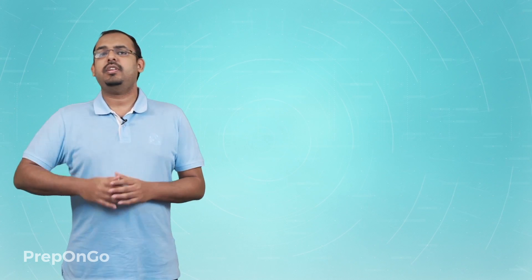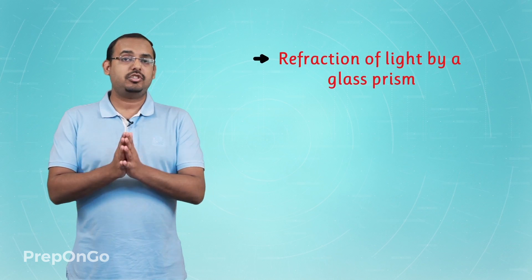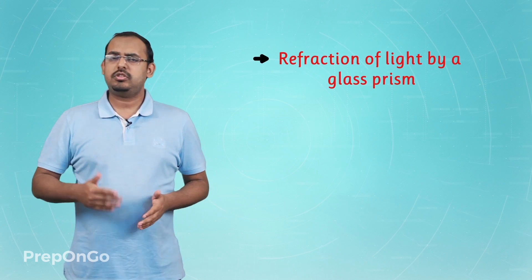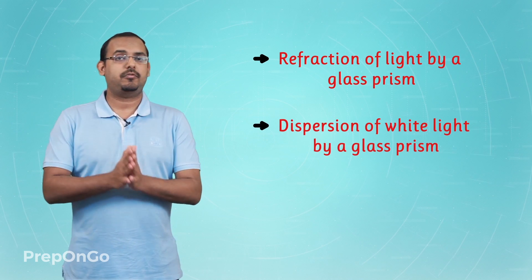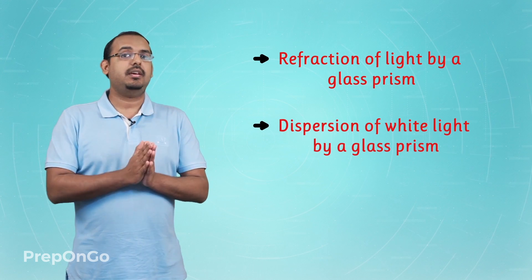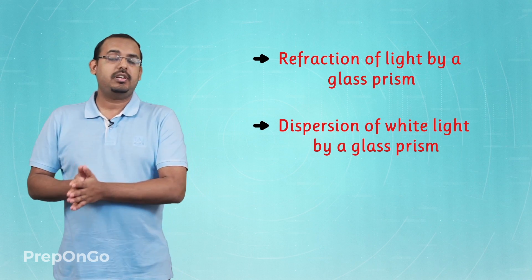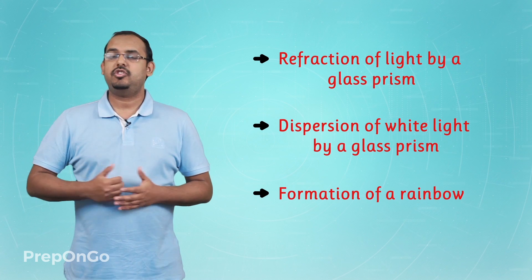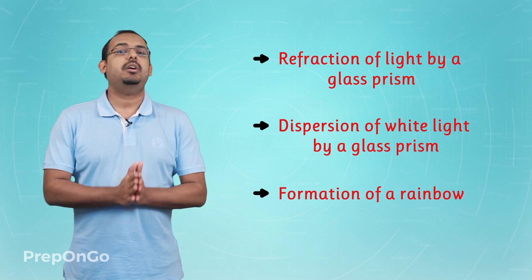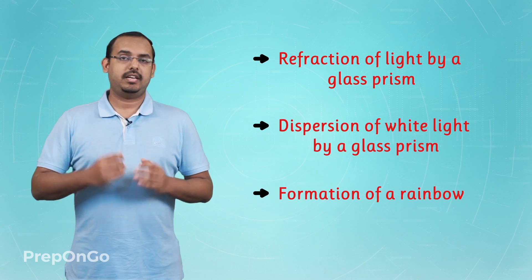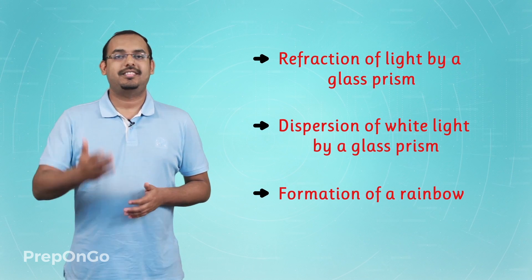So in this lecture, we have gone through the concepts of refraction of light through a glass prism and we have also seen dispersion of white light with the help of a glass prism. We understood how these concepts apply to the naturally occurring phenomenon of formation of a rainbow. In the next lecture, we will study about another interesting phenomenon that light exhibits, which is called the Tyndall effect. See you in the next lecture.